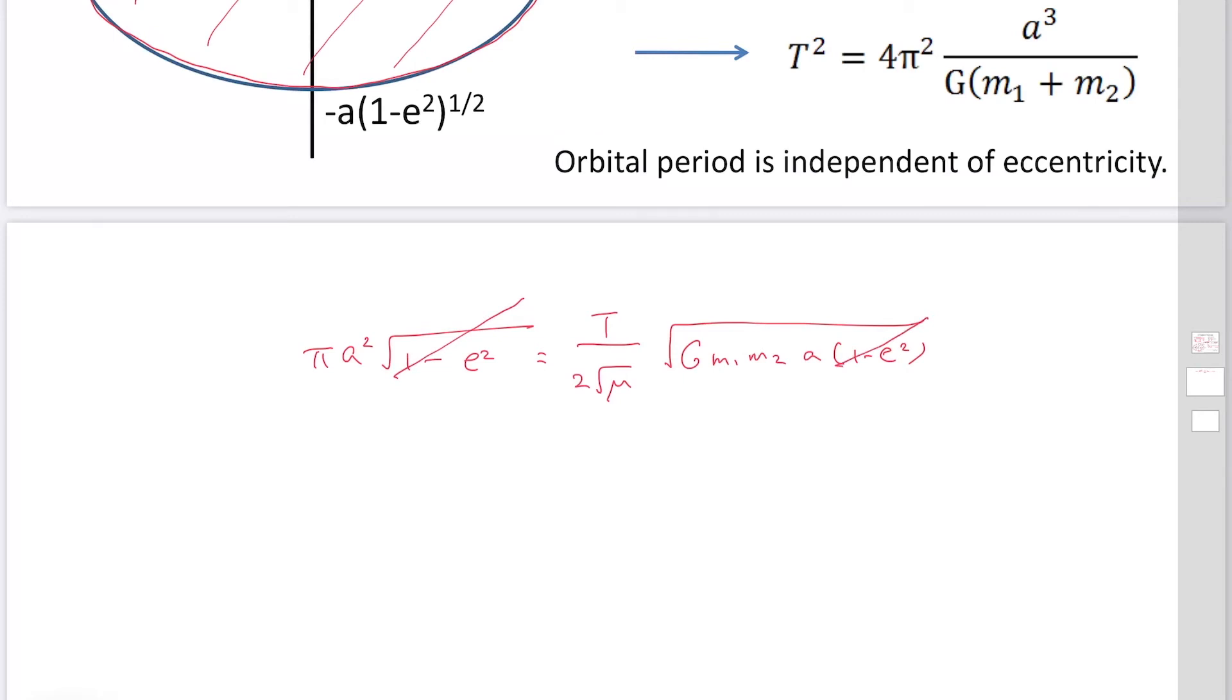And μ is m₁m₂ over (m₁ + m₂). So this becomes πa² over (T/2) = √(G(m₁ + m₂)a).